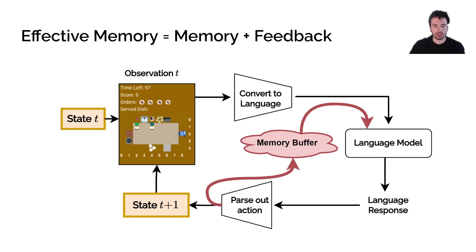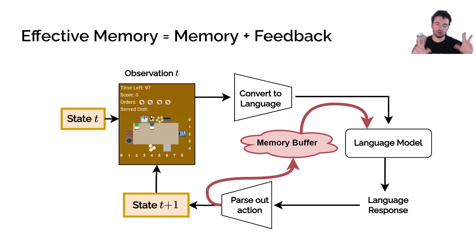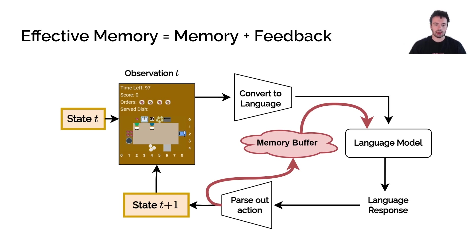First, we take the observation and convert it to language — for example, 'there is a cutting board at 2,8; there is a pot at 0,6; you are standing at 1,4; the other agent is standing at 1,2.' The LLM can then have a visual landscape of what the world looks like. That language is fed into the language model, which outputs a language response. The model is given options such as: would you like to go to the sink, go to the cutting board, or go to the delivery window.